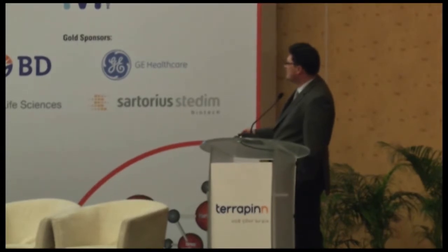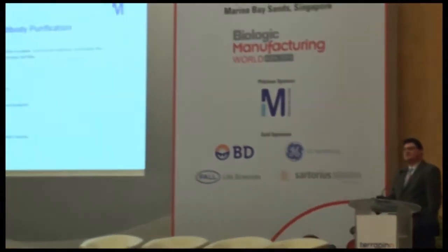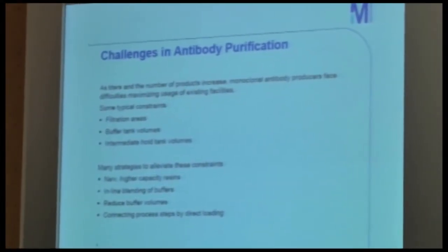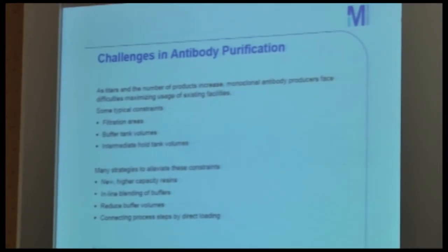But also, obviously, when we invest into a new facility — and I agree with the colleague speaking about this earlier — you want to spend the lowest amount of money possible, at the latest possible. Typical constraints when you come to existing facilities with high-titer processes come to the filtration areas, buffer tank volumes, or intermediate hold tank volumes. And we can discuss many strategies to alleviate all these constraints, some of which we can contribute to by supplying products into downstream processing.